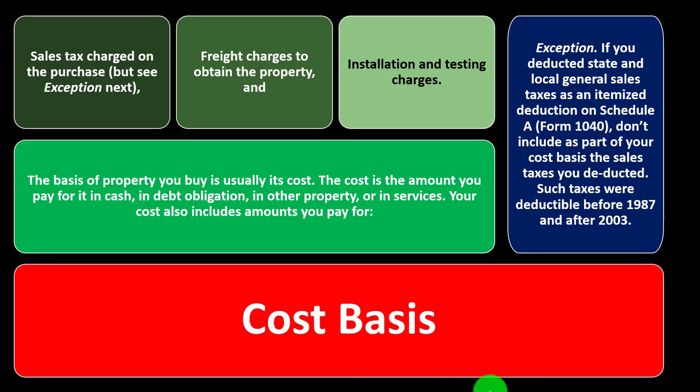Exception: if you deducted state and local general sales taxes as an itemized deduction on Schedule A of Form 1040, you don't include that sales tax as part of your cost basis. On Schedule A you can deduct either your income tax or your sales tax — and if you already deducted the sales tax, you can't double-dip and get the benefit twice.